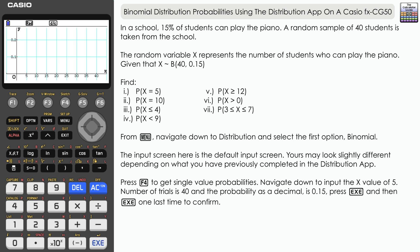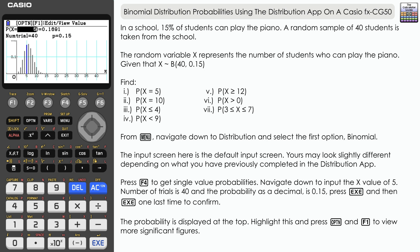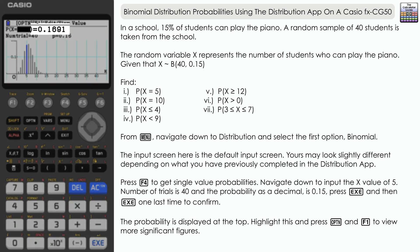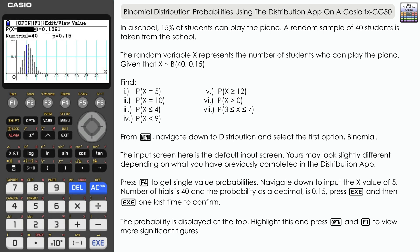Now we can see the distribution displayed here in graphical form, and we have the probability that we are looking for at the top here, 0.1691 to four significant figures.